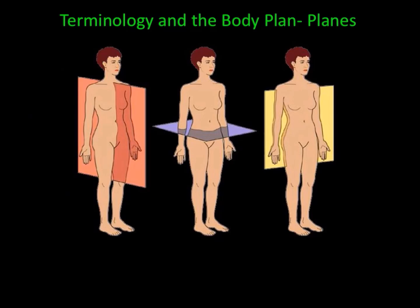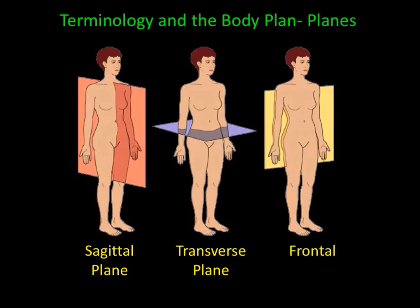Body planes are imaginary planes that dissect the human body in order to describe certain regions or sections of the body, or to describe the direction of body movements. There are three body planes. The sagittal plane divides the body into right and left segments. The transverse plane divides the body into superior and inferior sections. And the frontal plane divides the body into anterior and posterior sections.